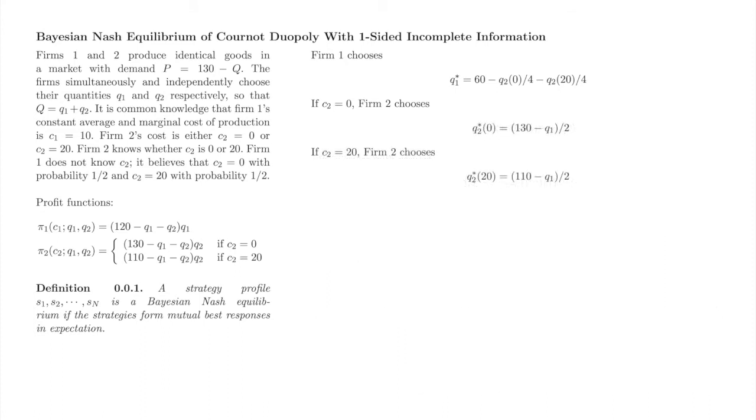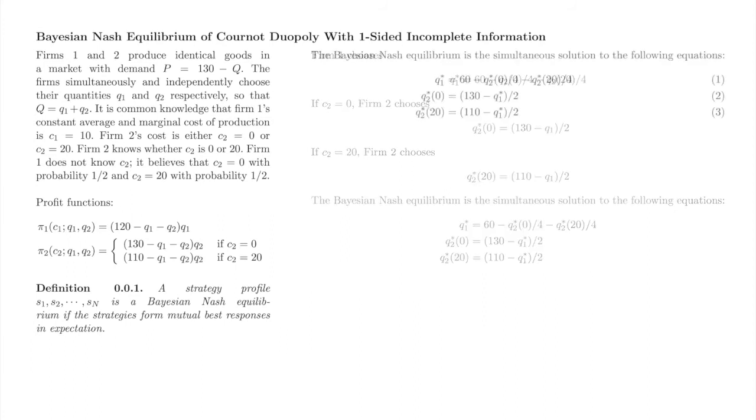Now, here are all of the best response functions together. The Bayesian Nash equilibrium occurs where we simultaneously solve the three best response functions. We'll call these equations 1, 2, and 3.